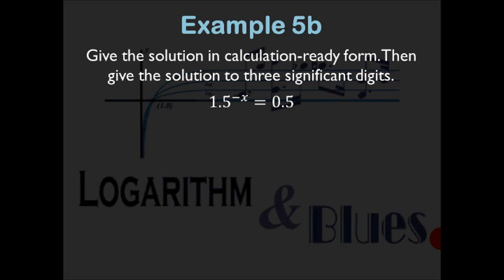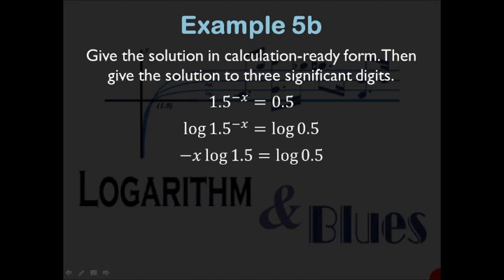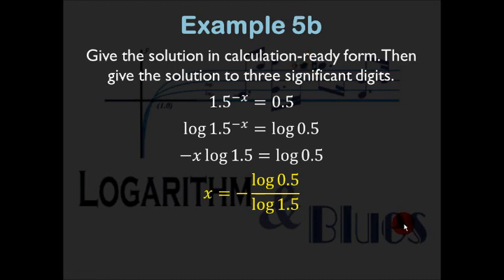Example 5B: solve 1.5^(−x) = 0.5. Take the log of both sides: log(1.5^(−x)) = log 0.5, giving −x·log 1.5 = log 0.5. Divide both sides by log 1.5: x = −log 0.5 / log 1.5. Input into calculator to get x ≈ 1.71. Even with a calculator, you need the algebra to set up the problem.